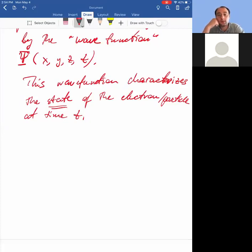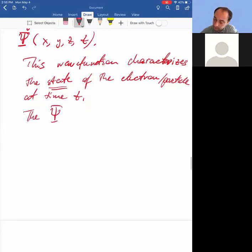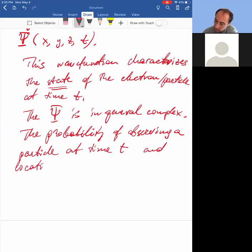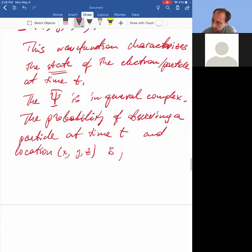Okay, so we'll have to do a little primer on complex numbers. But a complex number has an amplitude and a phase. So the probability of observing a particle at time t and location x, y, z...